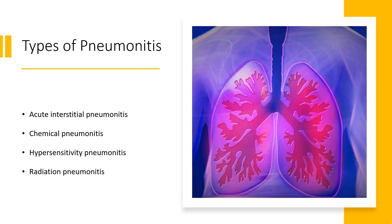Based on the triggers, pneumonitis could be categorized into four groups. Acute interstitial pneumonitis develops suddenly and symptoms quickly get worse; healthcare providers aren't sure what causes it. Chemical pneumonitis develops after inhaling chemicals from household or workplace products, inhalants such as chemicals in imaging tests, chlorine gas, pesticides, gasoline, and smoke.